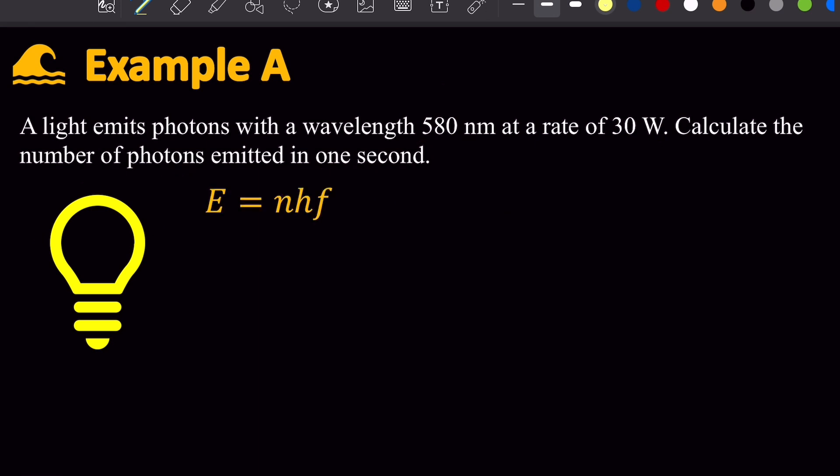So this is going to use energy equals number of energy packets times hf. In this case, each energy packet is a photon. And then n, the quantum number, would be the number of photons.